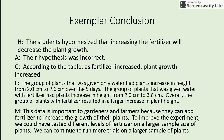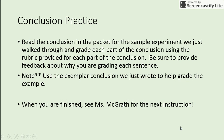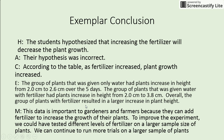For M, the meaning: this data is important to people like gardeners and farmers because they can add fertilizer to increase the growth of their plants. For the improvement: to improve the experiment, we could have tested different levels of fertilizer on a larger sample size — increasing sample size will always increase how valid our experiment is. For future data: we can continue to run more trials on a larger sample of plants.